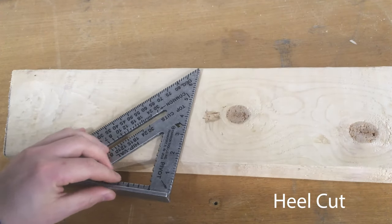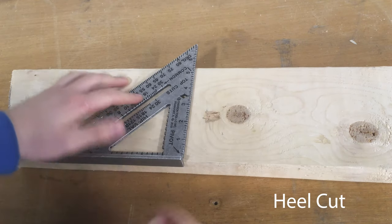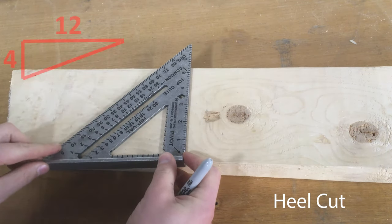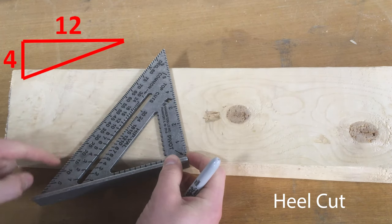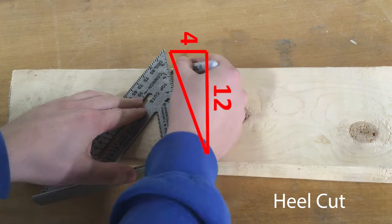To make your heel cut, put the square flat up against your board, and while pivoting at the pivot point, move the scale so the common number, in this case 4, lines up with the edge of your board, and then you can make your mark.